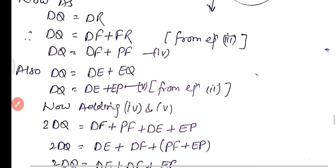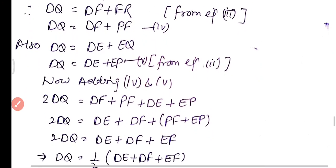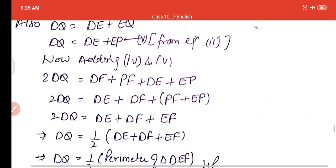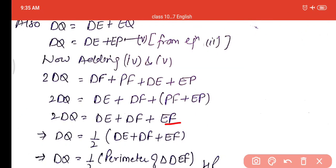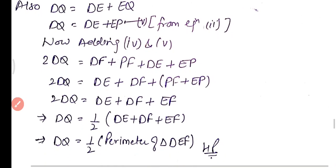Adding equations four and five: 2·DQ = DF + FP + DE + EP. Now DE + DF are sides, and FP + EP = EF. So 2·DQ = DE + DF + EF, which is the sum of all sides — the perimeter of triangle DEF. Therefore DQ = half the perimeter of triangle DEF.